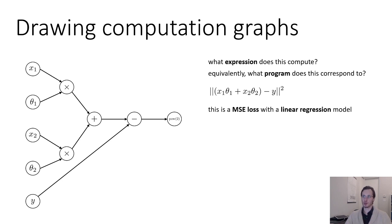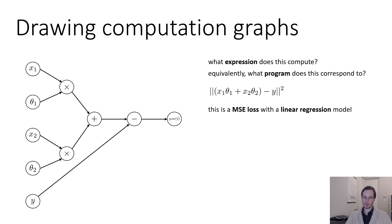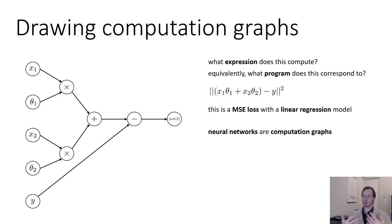Generally, when we draw computation graphs for neural networks or other types of models, we're really drawing the graph combined with a loss function. At the end of the graph, the result should be a scalar value representing the loss. That way, when we want to use an optimization algorithm like gradient descent, we compute gradients through the entire computation graph, giving us the gradients we need to optimize our loss.